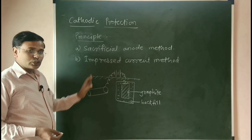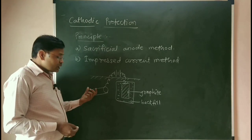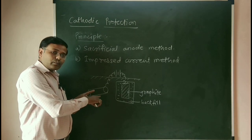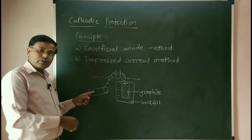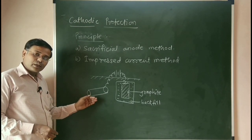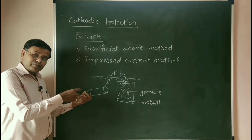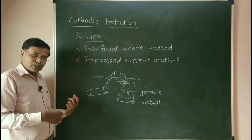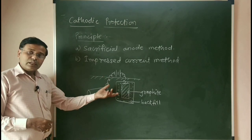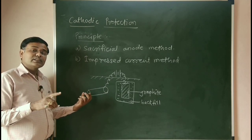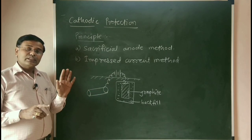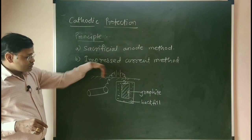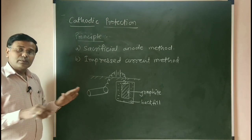We impress the current in the opposite direction of the corrosion current. When corrosion is taking place, anodic reactions occur — electrons are transferred from anode to cathode, and the resulting electric current flows in the opposite direction, which is called the corrosion current. By applying current from the DC battery in the opposite direction of the corrosion current, the corrosion current is nullified and no corrosion takes place.